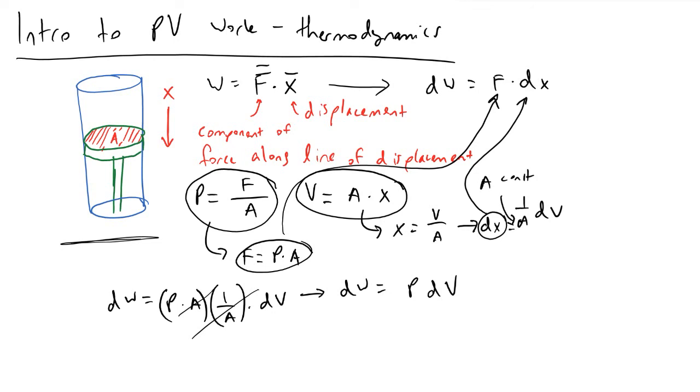Now what we're going to do is integrate both sides of our equation to solve for the total amount of work done during an expansion or contraction. What we're going to find is that work is ultimately equivalent to the negative integral from V1 to V2 of pressure times the change in volume of your process.